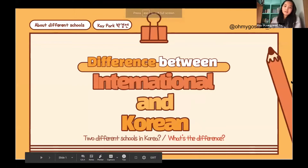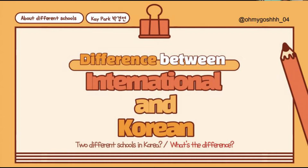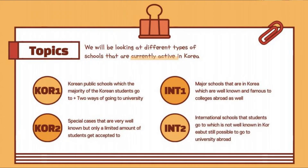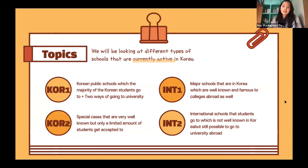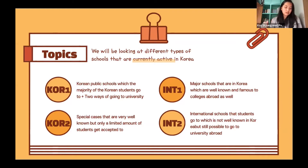I'm going to be talking about the difference between international and Korean schools — the similarities and differences. I divided them into four categories, two big different categories. One is Korean schools, which are like Korean public schools. Then there are special cases that are very well known, but only a limited number of students get accepted to those schools. And then there are two kinds of international schools.